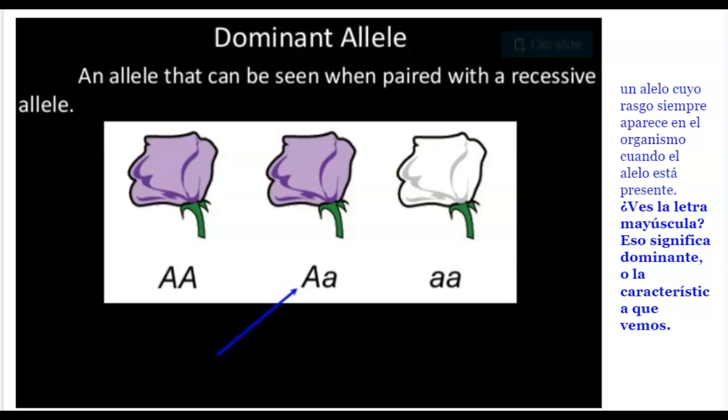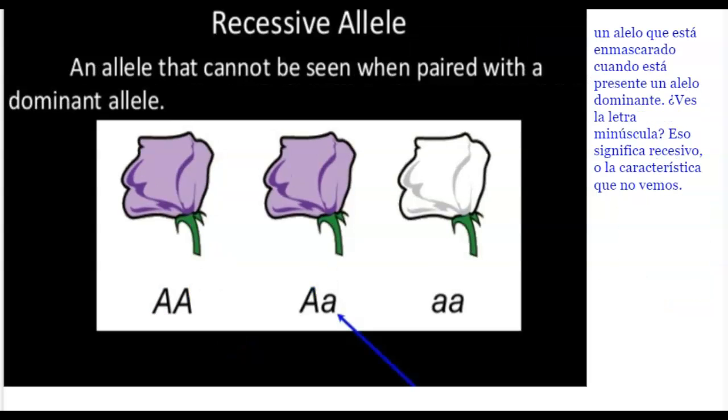Again, dominant allele, capital A, it's the one we see. Recessive allele, it's the one we don't see.